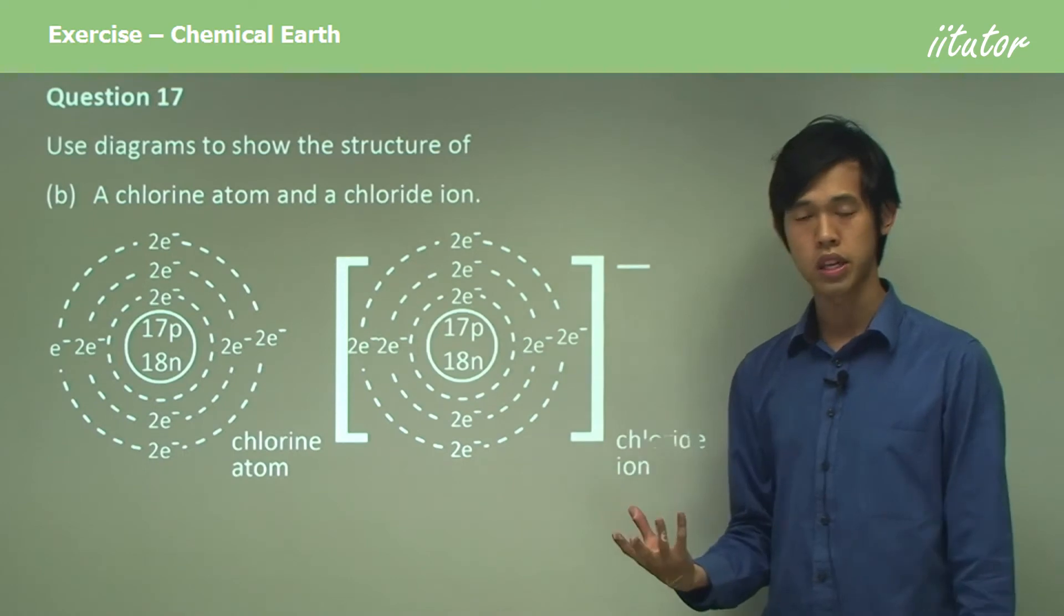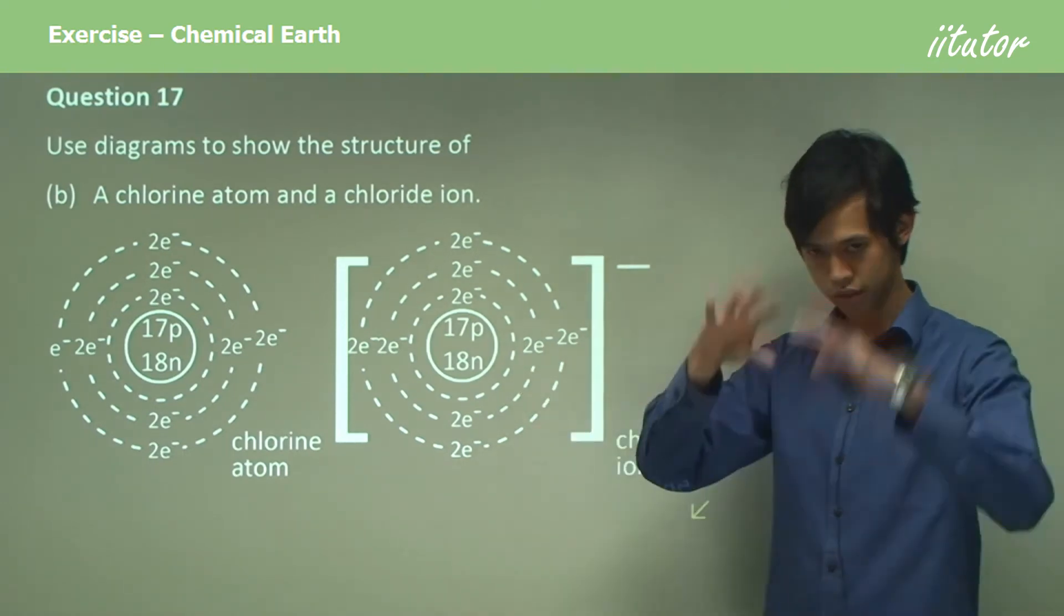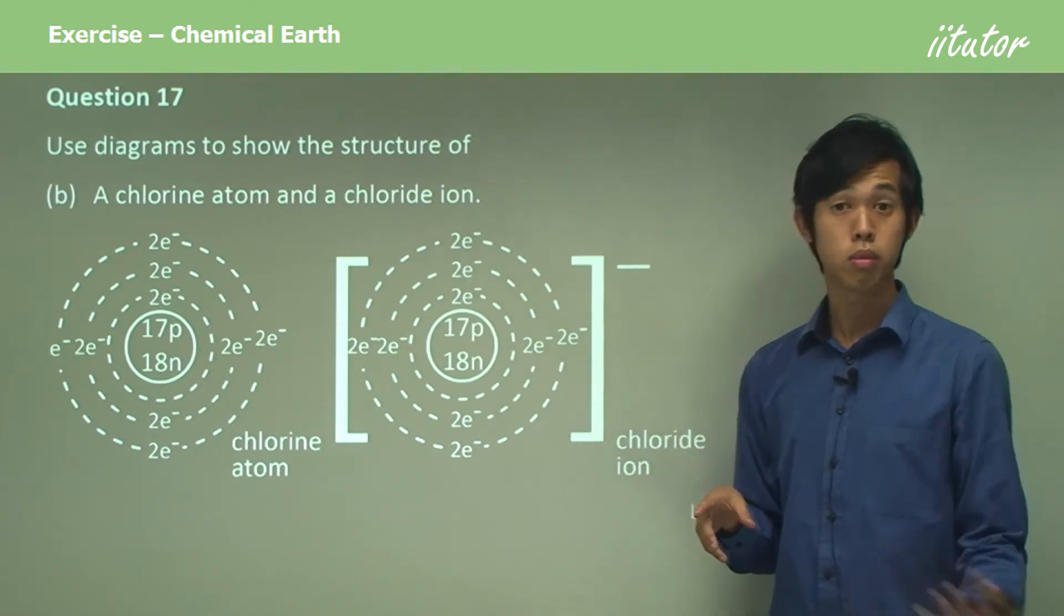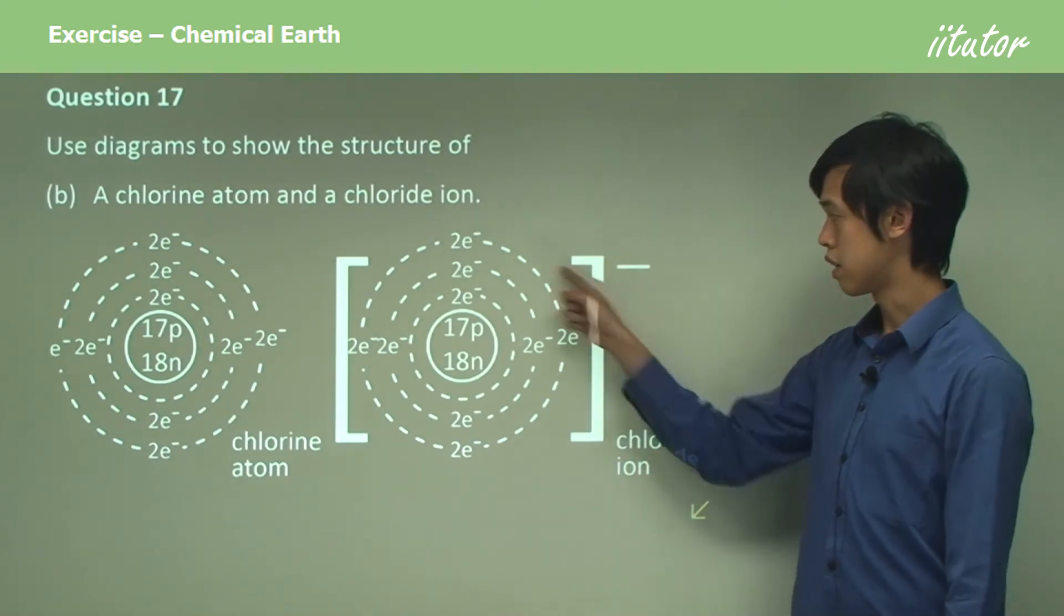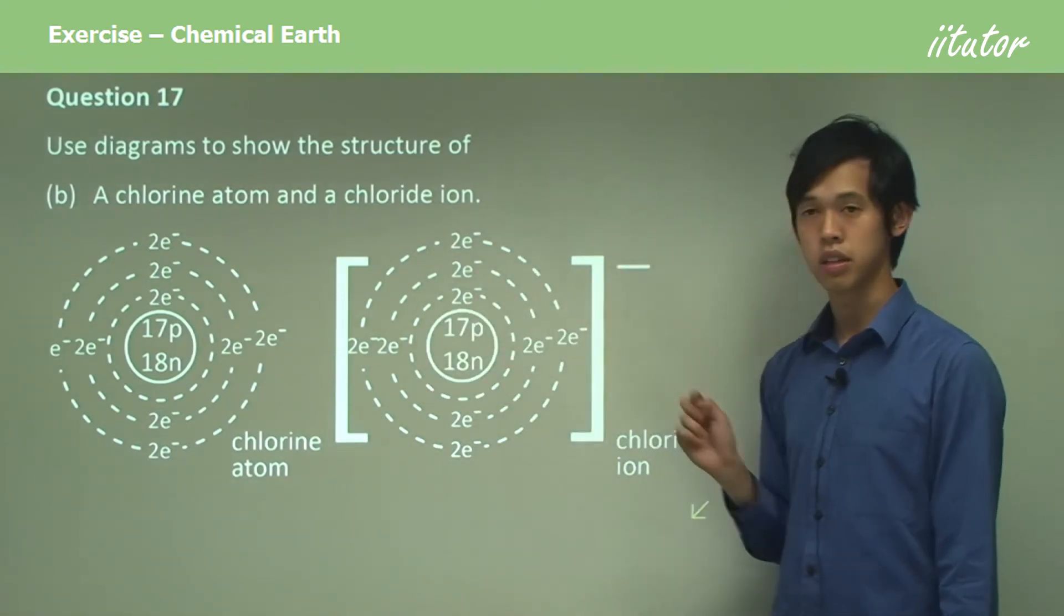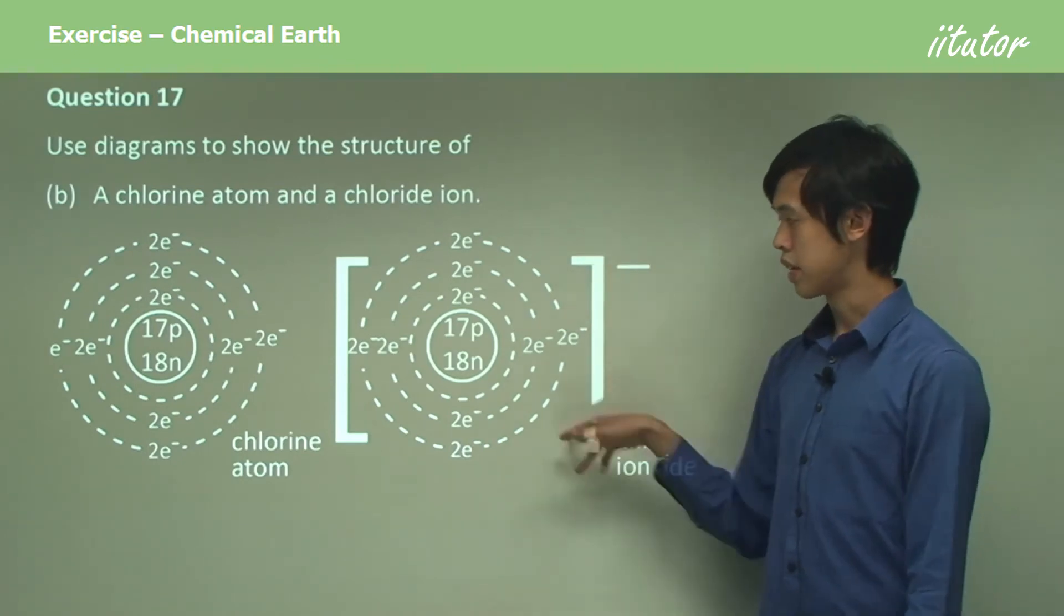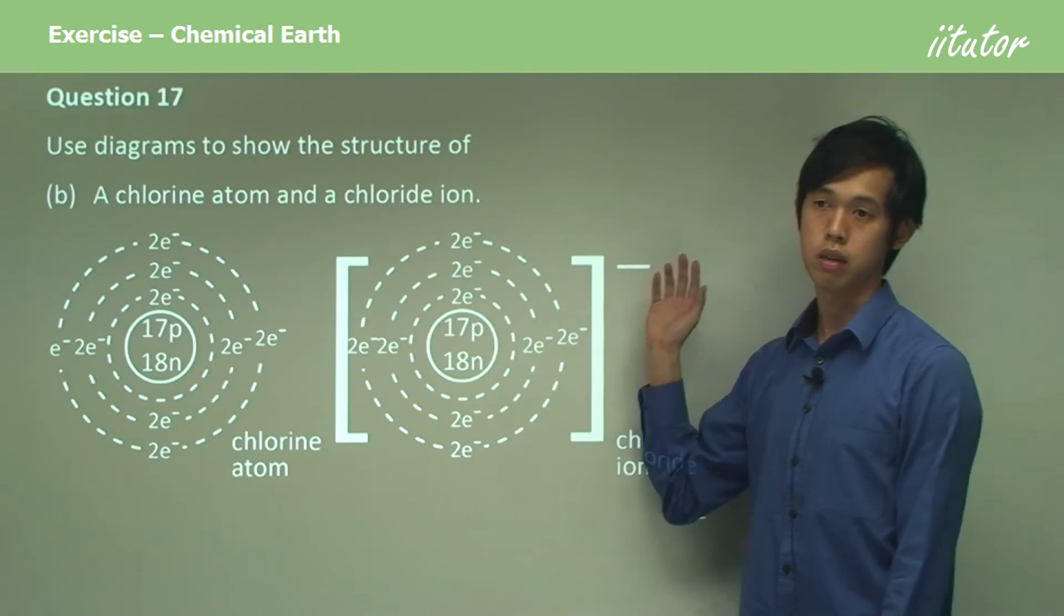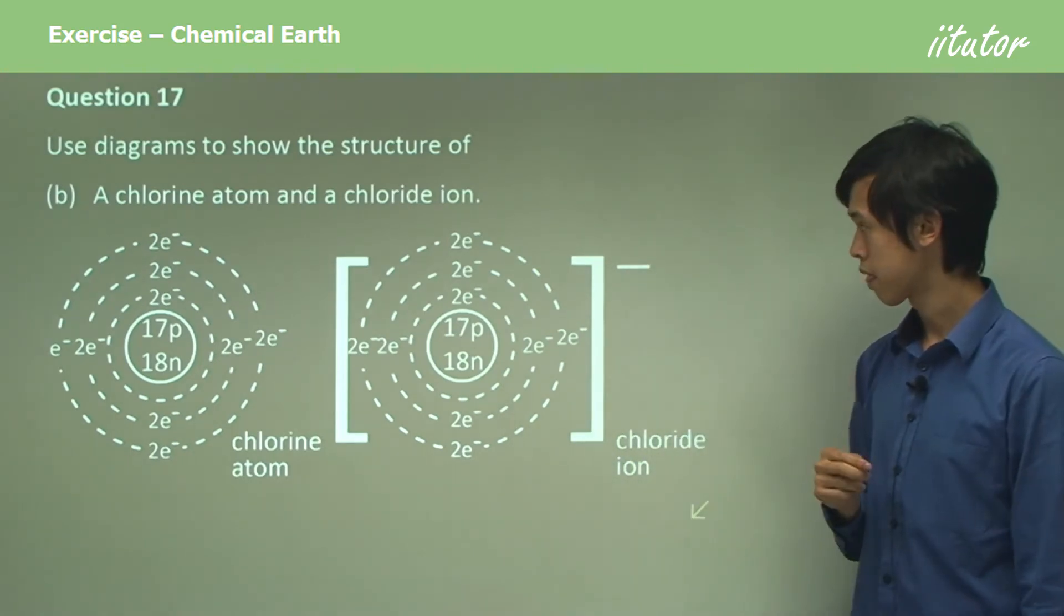We can see there's one more electron in its outer shell in the atom compared to the number of protons. So there'll be one more negative charge. So this whole thing will be charged to negative one. And so that's why we have these square brackets that say this particle is charged with a charge of negative one.